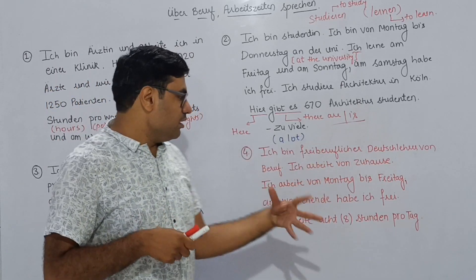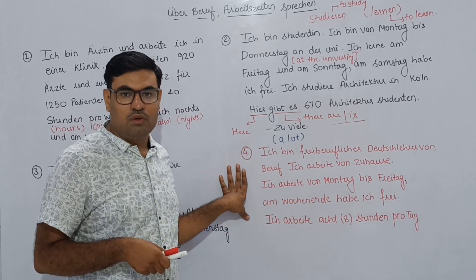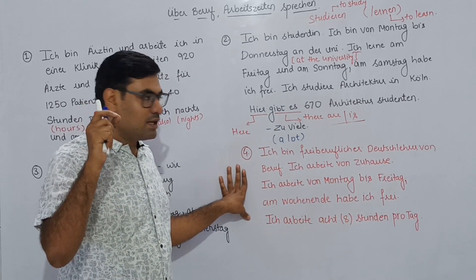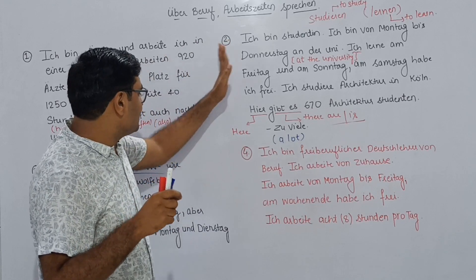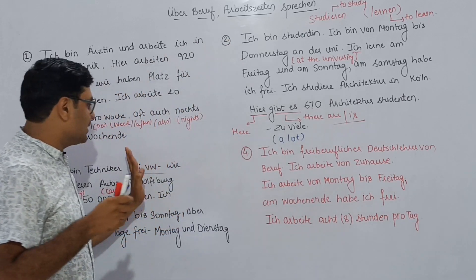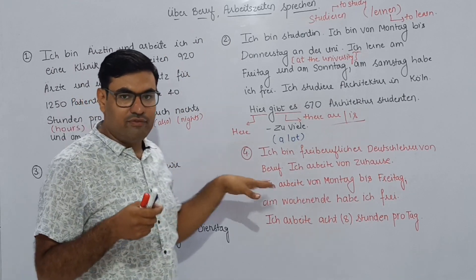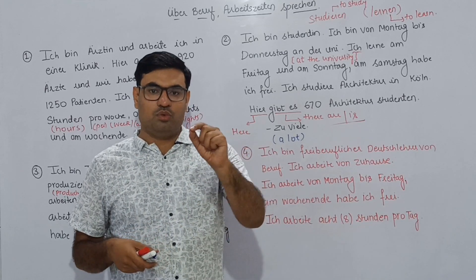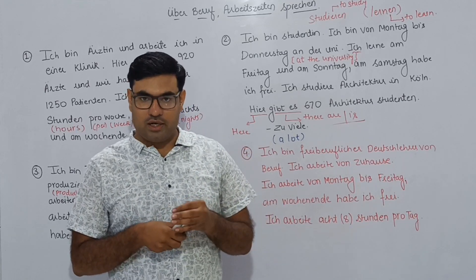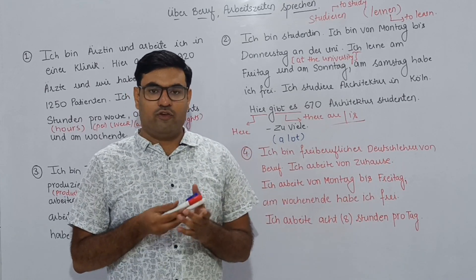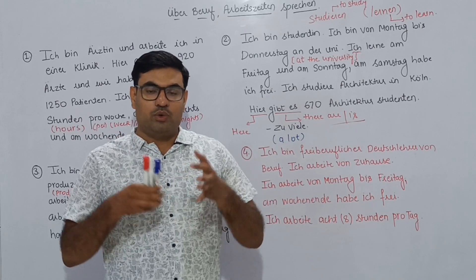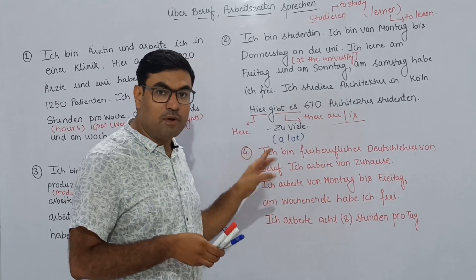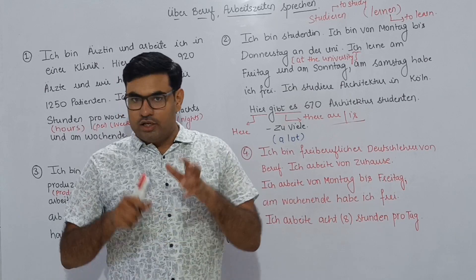'Aber habe ich zwei Tage frei — Montag und Dienstag.' But I have two days free — that is Monday and Tuesday. Monday and Tuesday he has free, and he works from Wednesday till Sunday.